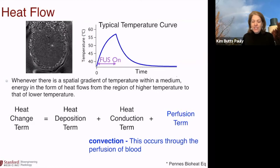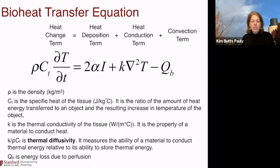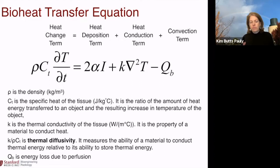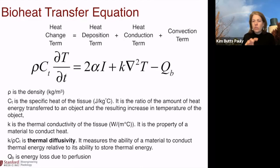Now the Pennes bio heat transfer equation — it's not so bad if you think about the four parts: the heat change term, the heat deposition term, the heat conduction term, and the convection term. The heat change term has the specific heat of the tissue. The heat deposition term has to do with the absorption of the tissue. The heat conduction term has to do with thermal conductivity. And then the convection term. There are some constants in there but it all kind of makes sense.